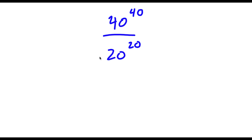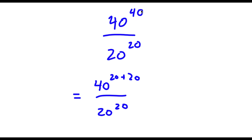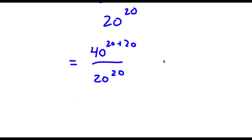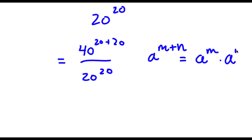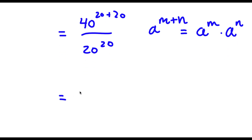Alright, so I have 40 to the power of 40 over 20 to the power of 20. Now to start, I can rewrite this as 40 to the power of 20 plus 20 over 20 to the power of 20. So all I did was rewrite 40 as 20 plus 20 because 40 is equal to 20 plus 20. So now using the rule a to the power of m plus n equals a to the power of m times a to the power of n, I can rewrite 40 to the power of 20 plus 20 as 40 to the power of 20 times 40 to the power of 20.